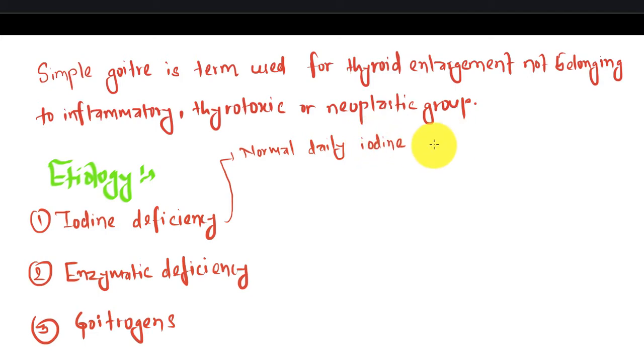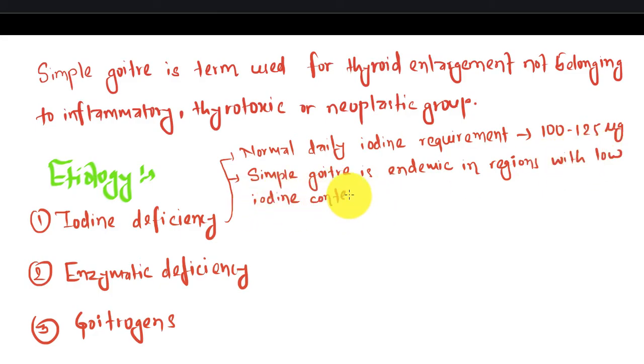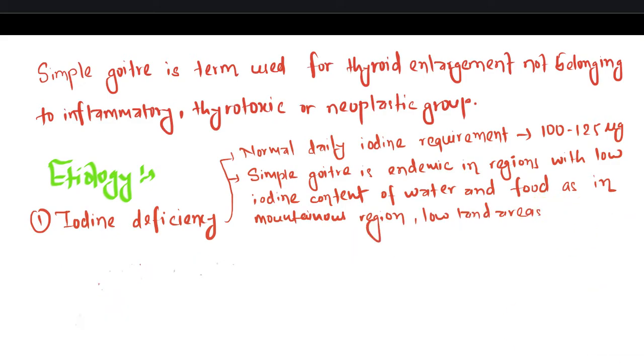Normal daily iodine requirement is 100 to 125 micrograms. Simple goiter is endemic in regions with low iodine content in food and water, such as mountainous regions and lowland areas.